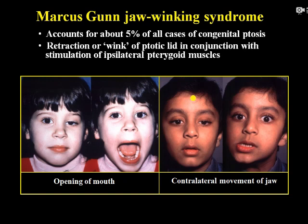Marcus-Gunn jaw-winking syndrome, as explained, involves an abnormal communication between the third nerve and fifth nerve. Whenever the patient moves the pterygoid muscles while eating or chewing, the ptotic lid will move and the ptosis will improve. This is known as Marcus-Gunn jaw-winking syndrome.